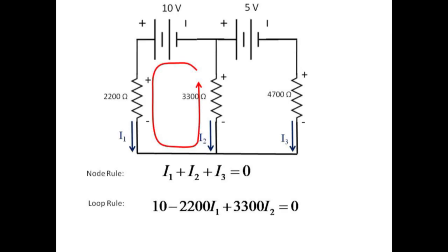Circulating around the loop shown in red, we see a voltage gain of 10 volts, followed by a drop of 2200I1 across R1, and a gain of voltage of 3300 times I2 across R2. These voltage gains and losses around the closed loop must add to zero.